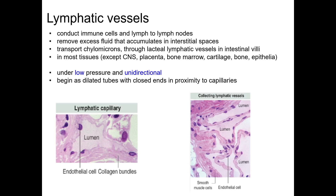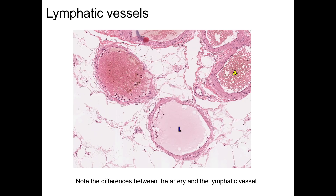These larger vessels have three tunics similar to small veins, but the lumen is larger and more irregular. Also like veins, lymphatic vessels have valves, but they're usually greater in number than in veins. Here's a micrograph showing an artery and a lymphatic vessel. Compared to the artery, the lymphatic vessel has thinner tunics and it lacks red blood cells in the lumen.